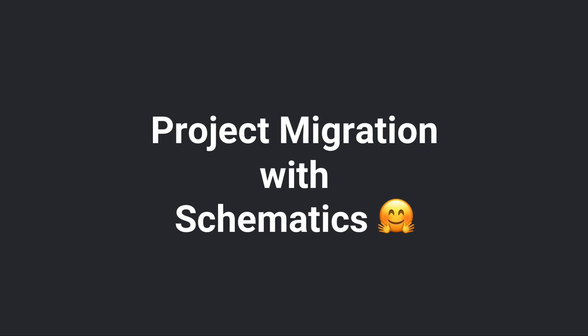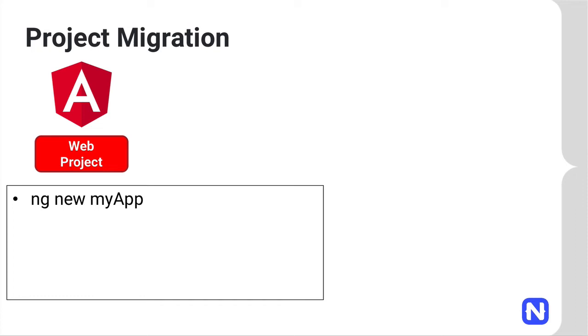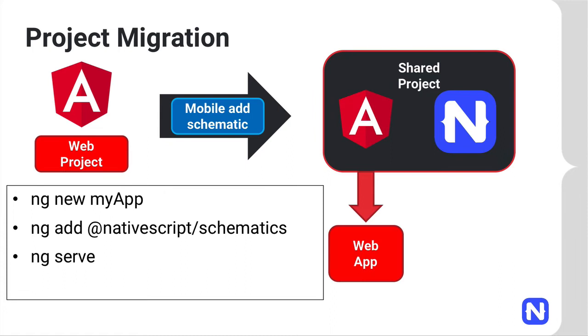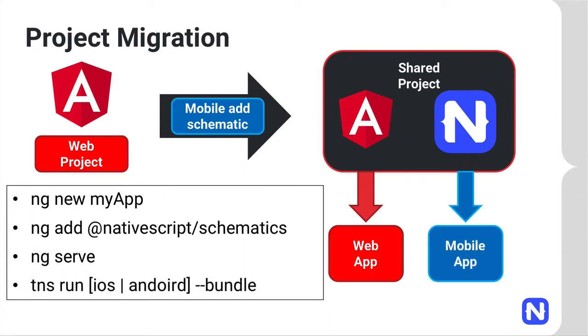For project migration with schematics, if you started with a web-only or mobile-only approach and want to move to a code-sharing structure, there are schematics to help. If you have a web project, you can call ng new my-app and then call ng add @nativescript/schematics. This will take your web project and convert it into a code-sharing one, after which you can run ng serve or TNS run iOS or Android --bundle to get either a web or mobile application.